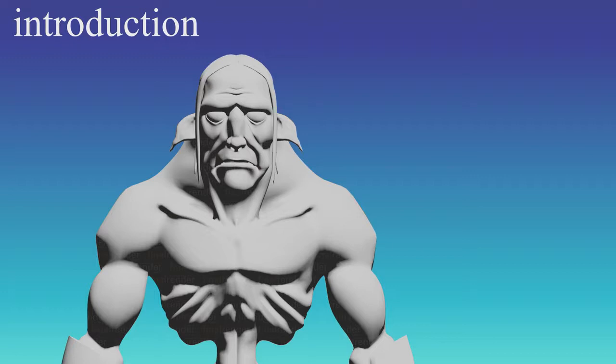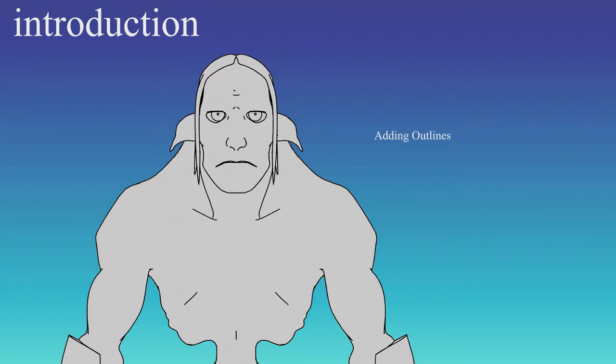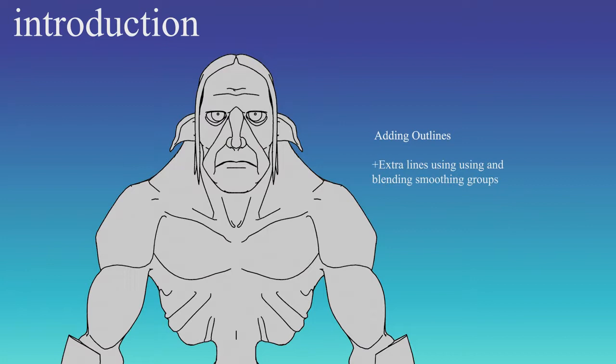And then we're going to add a basic material and the line work. And then we're going to add the extra line work, which is going to be provided via smoothing groups. And we're going to learn how to blend those to get these desired effects of lines, creases, wrinkles, all that lovely stuff.